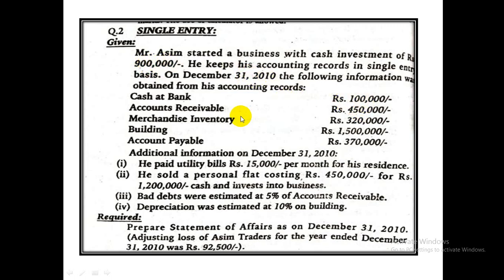December 31 ka data humare saamne hai: cash at bank 1 lakh, accounts receivable 4 lakh 50, merchandise inventory 3 lakh 20, building 15 lakh. Ye saare assets hain.